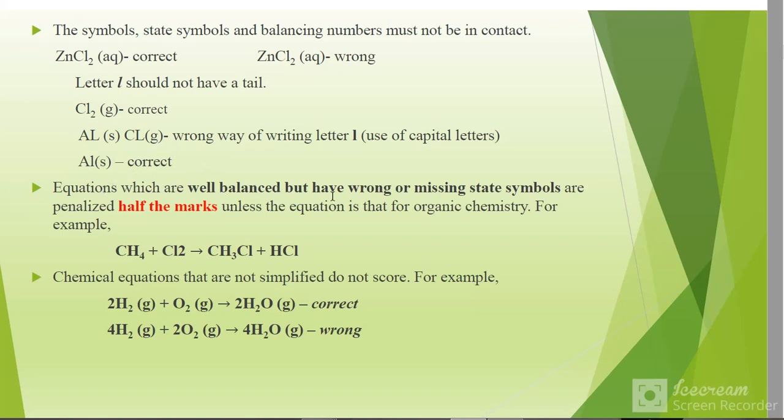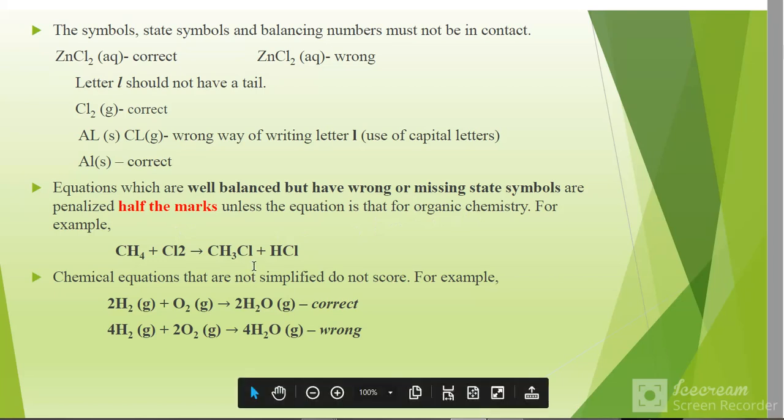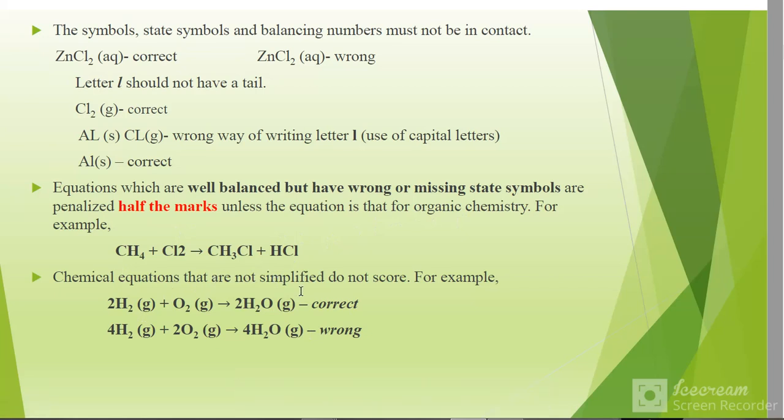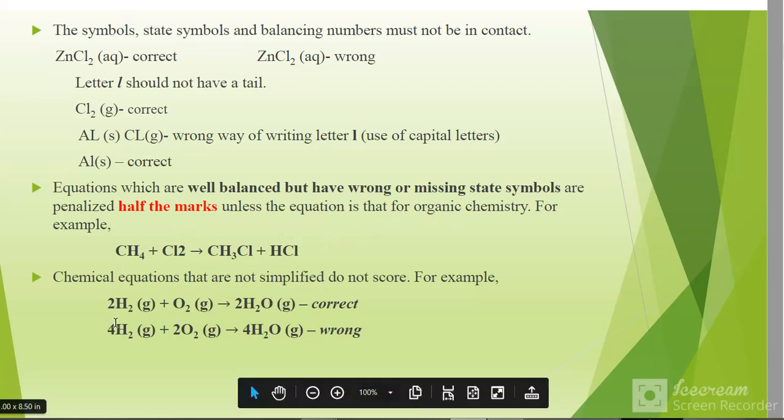Equations which are well balanced but have wrong or missing state symbols are penalized half the marks, unless the equation is that of organic chemistry. For example, this one here, there is no penalization. A chemical equation that is not simplified does not score. For example, if you write 2, 4, 2, 4, you should have simplified it to remain 2 here, 1 here, and 2 here. This one is wrong, so you won't score that.